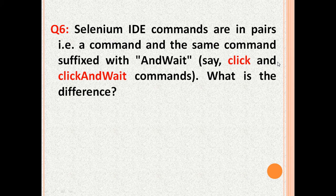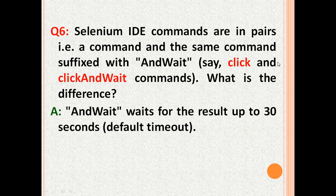Selenium IDE commands are in pairs, that is a command and the same command suffixed with AndWait, say click and clickAndWait commands. What is the difference? The first command times out immediately, failing the test case, but the AndWait command waits for the result up to 30 seconds, which is a default timeout.